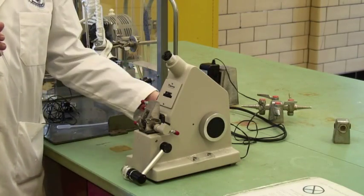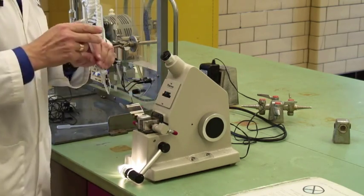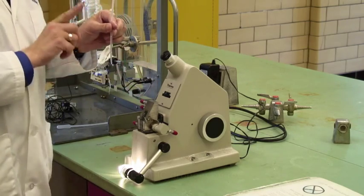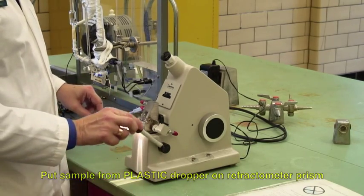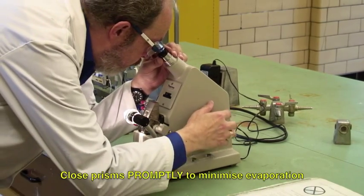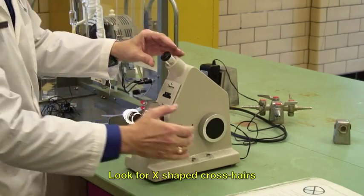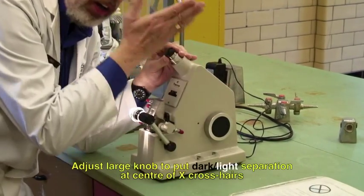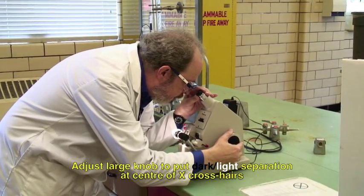You will remember the refractometer from last year. You open the jaws of the refractometer and put your sample on the lower prism. Close it again. Make sure you only use plastic droppers. Glass droppers can scratch that. Bring the light arm up and then look through this eyepiece and you will see an X-shaped crosshair. As you adjust this large knob on the side, you will see a dark and light separation moving up and down. You get the dark and light separation right into the center of the crosshairs.